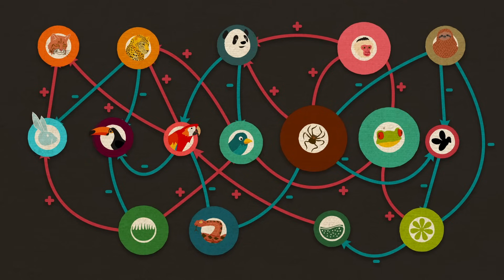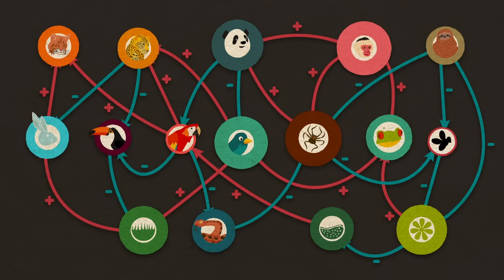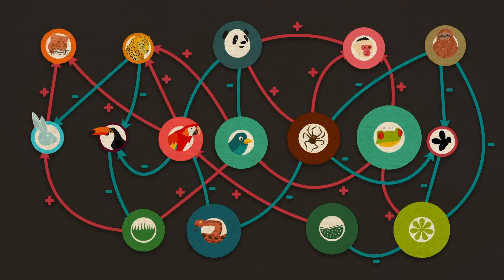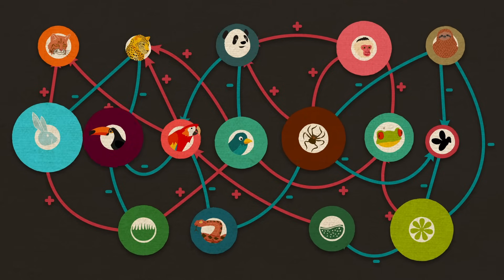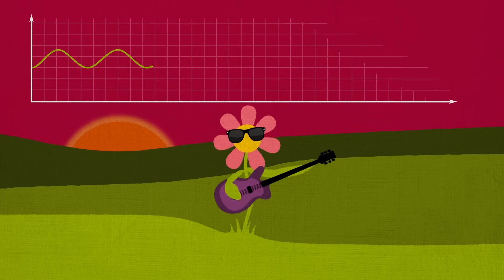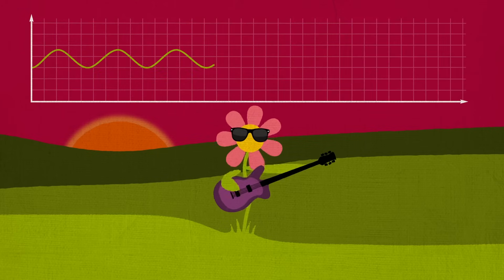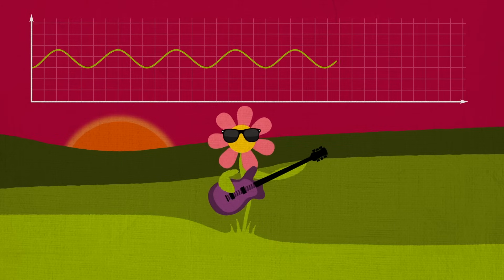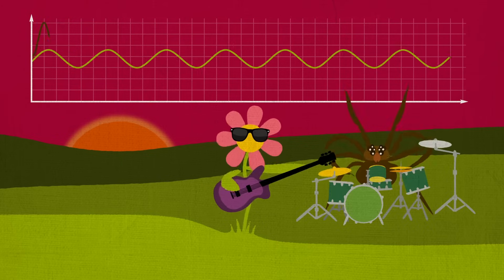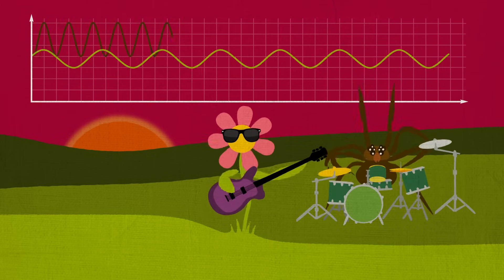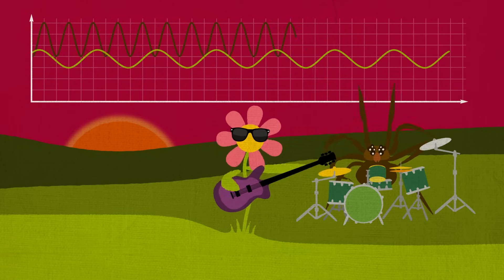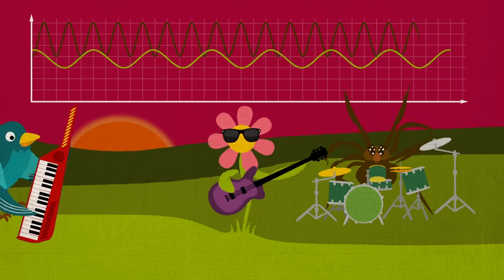A food web containing 20 populations can generate thousands of loops of up to 20 links in length. But instead of forming a disordered cacophony, feedback loops in ecological systems play together, creating regular patterns just like multiple instruments coming together to create a complex but harmonious piece of music.